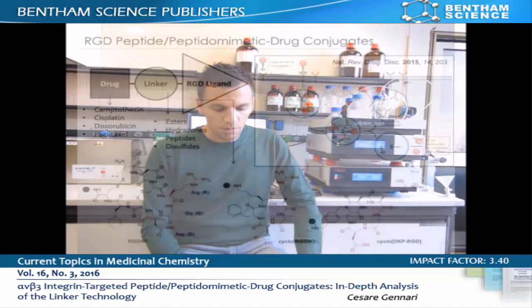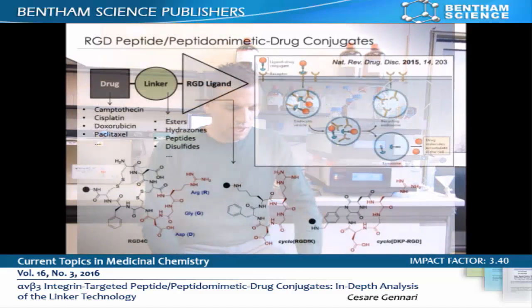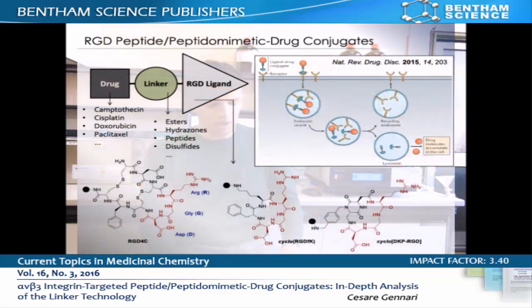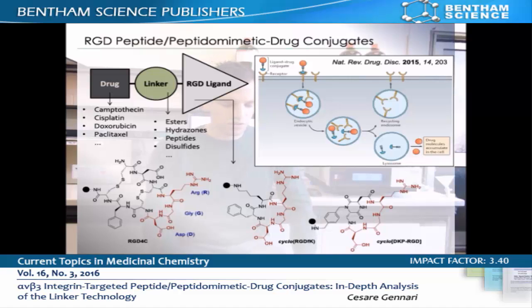For example, peptides and peptidomimetics featuring the RGD sequence are known to bind alpha-v-beta-3 integrin, which is a receptor overexpressed on the surface of tumor cells.